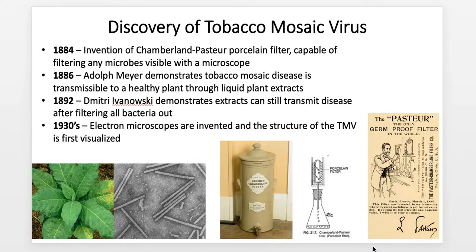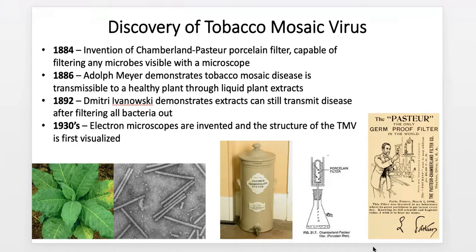It was many years still until we became familiar with what a virus is and what it looks like, but at that point we knew there was something we didn't know about — a significant advance in germ theory and the transmission of pathogens. It wasn't until the 1930s that we were actually able to visualize the structure of a virus when electron microscopes were invented, and the tobacco mosaic virus was first visualized and identified, giving it the honor of being the first virus we could describe and see using electron microscopy.